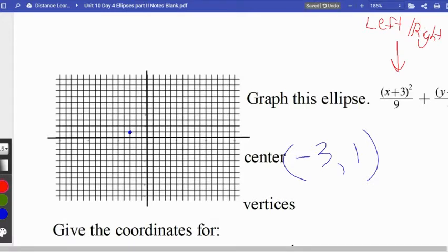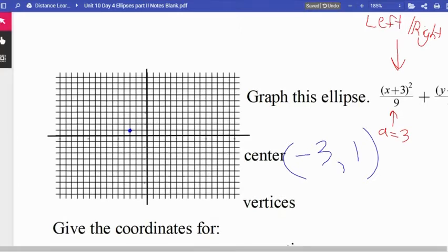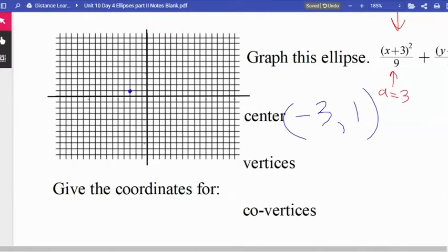So looking at this equation, how can I tell which direction the vertices will be in? Are they going to be left and right, meaning with x, or are they going to be up and down with y? Well, where are the vertices? Which axis do they live on, the major or the minor? If you're thinking major, you listened well in the last video.